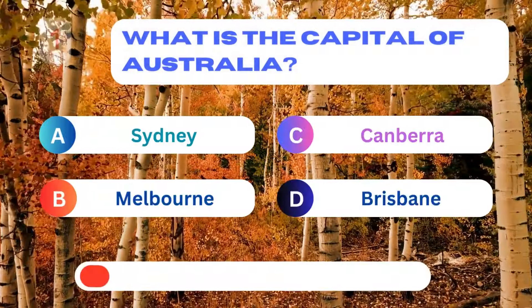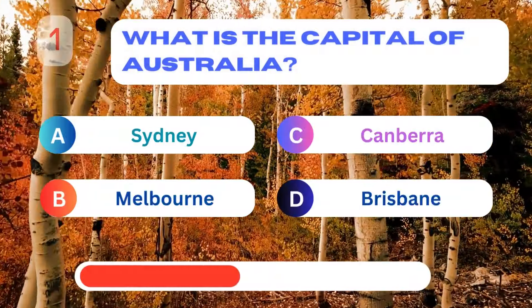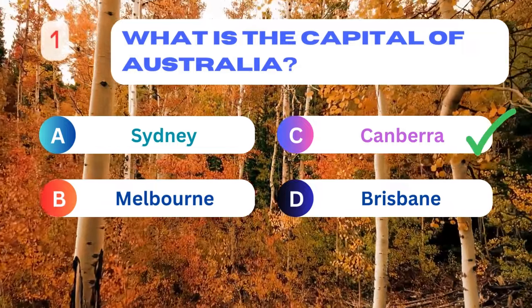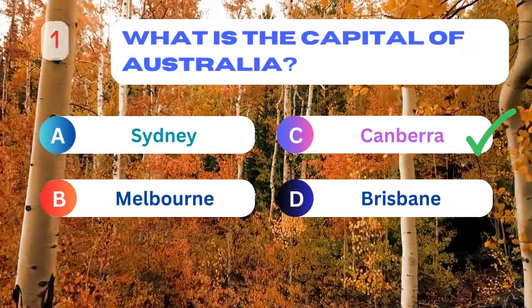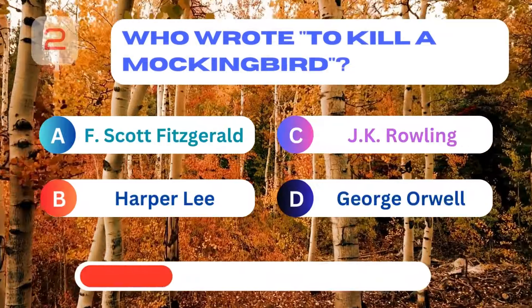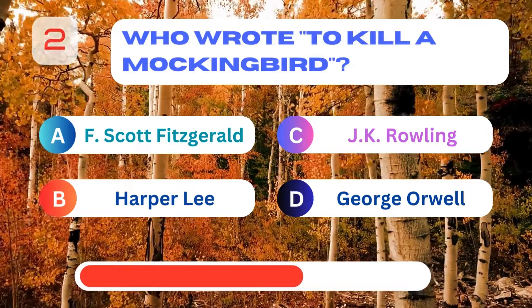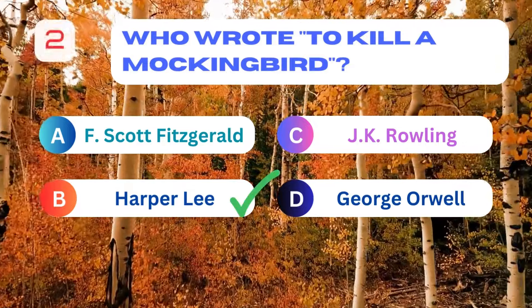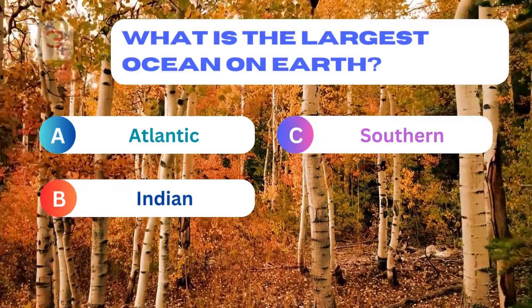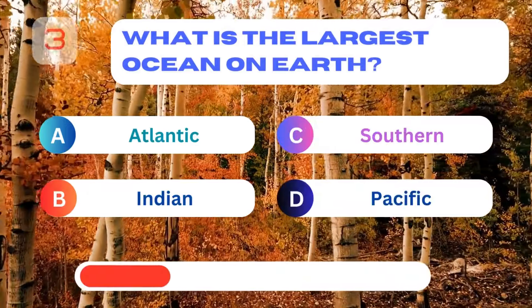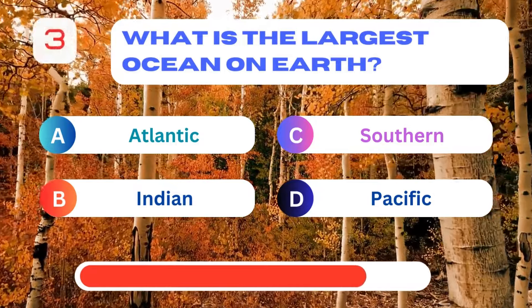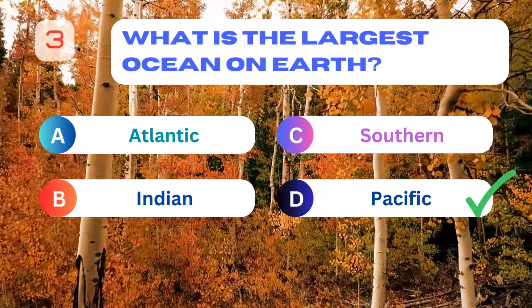What is the capital of Australia? Canberra. Who wrote To Kill a Mockingbird? Harper Lee. What is the largest ocean on Earth? Pacific.